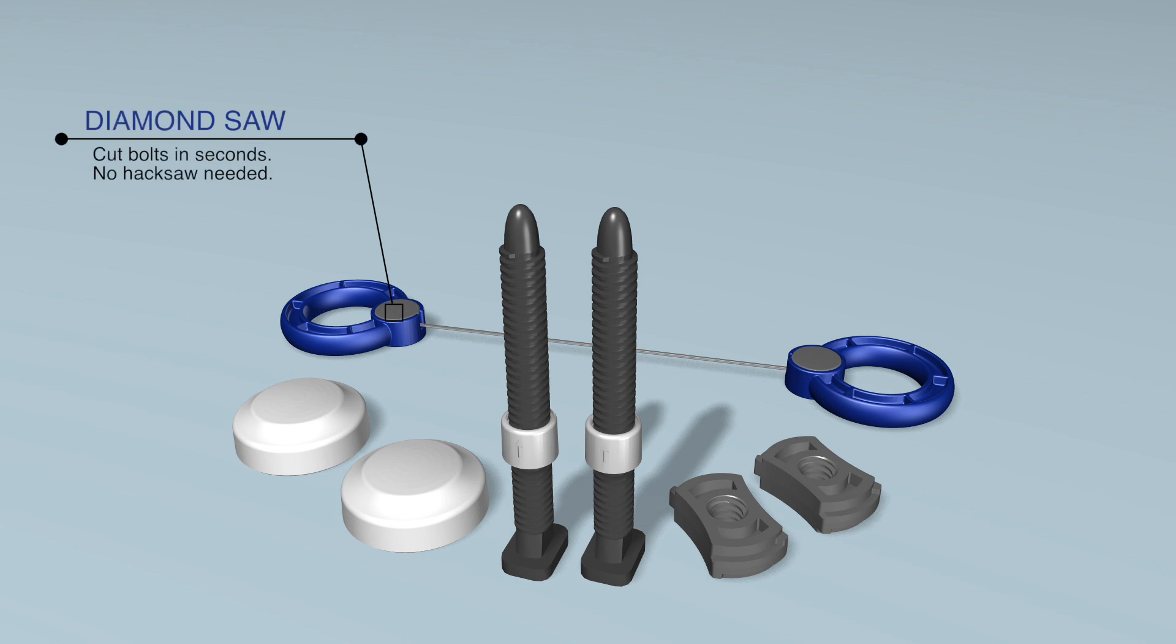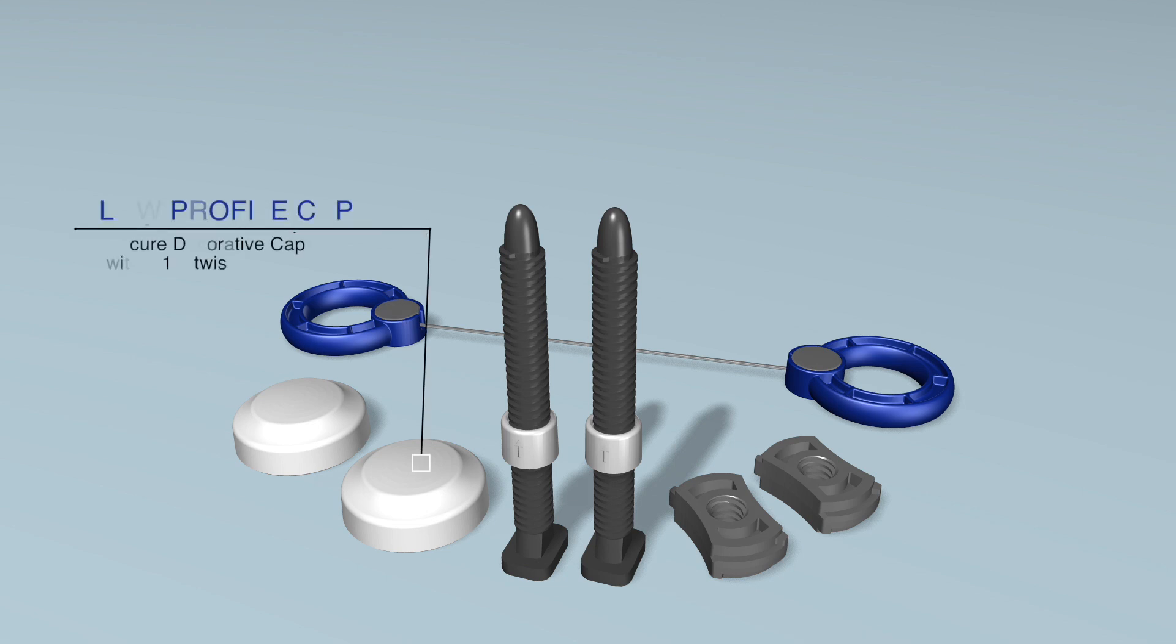The diamond saw cuts bolts in seconds in tight spaces. No hacksaw is needed. The low-profile decorative caps are secured with a simple twist.